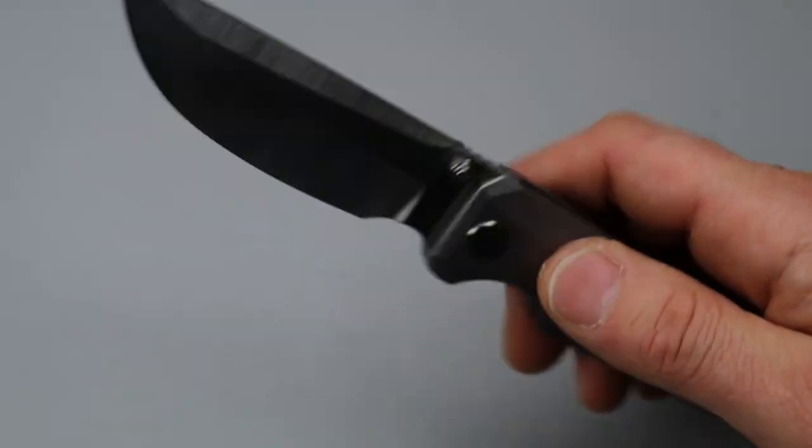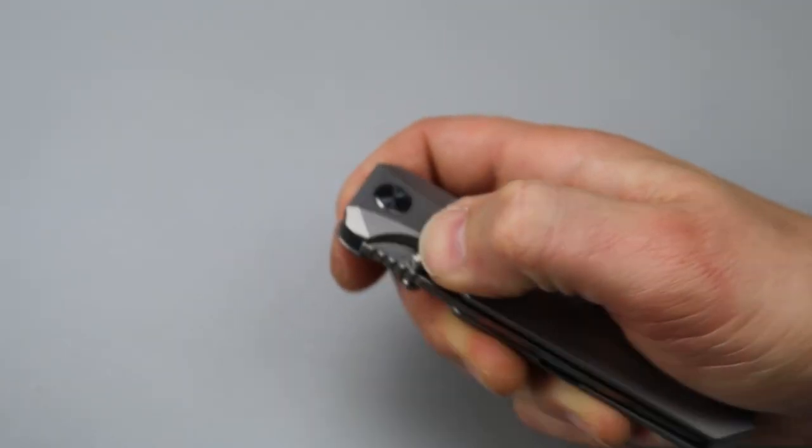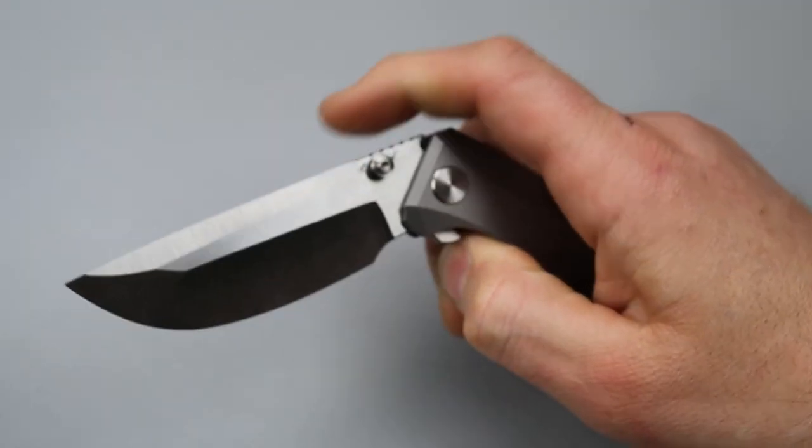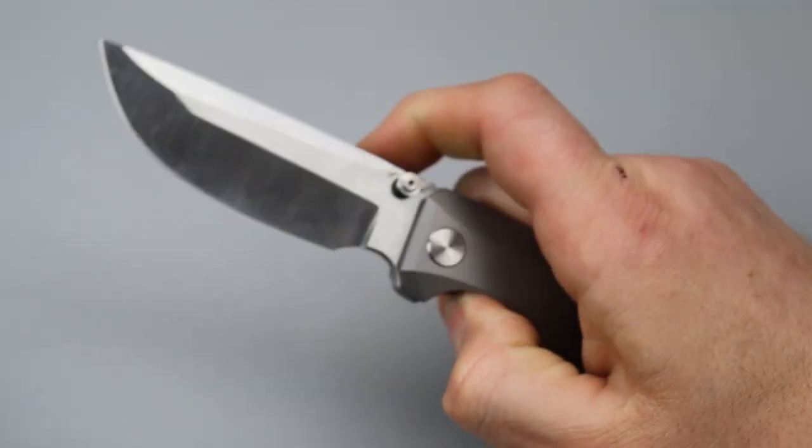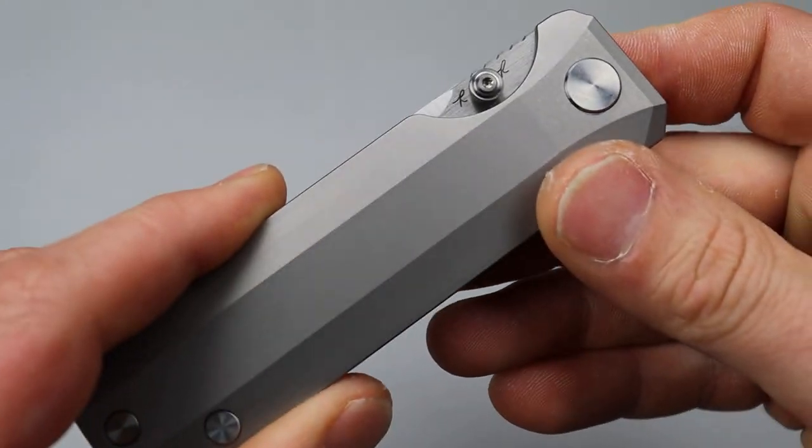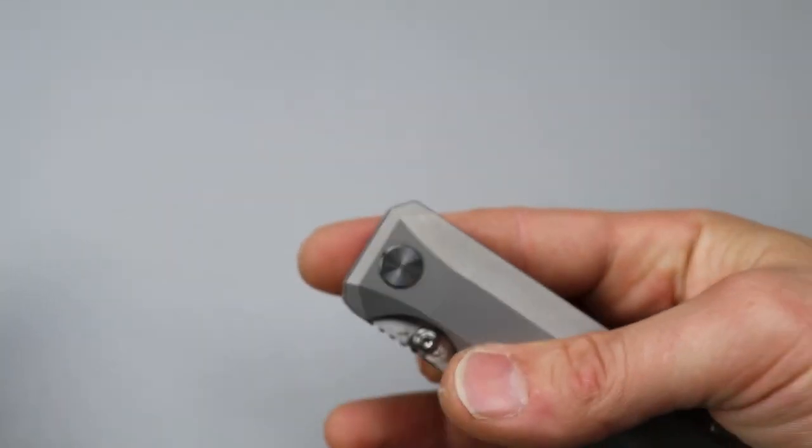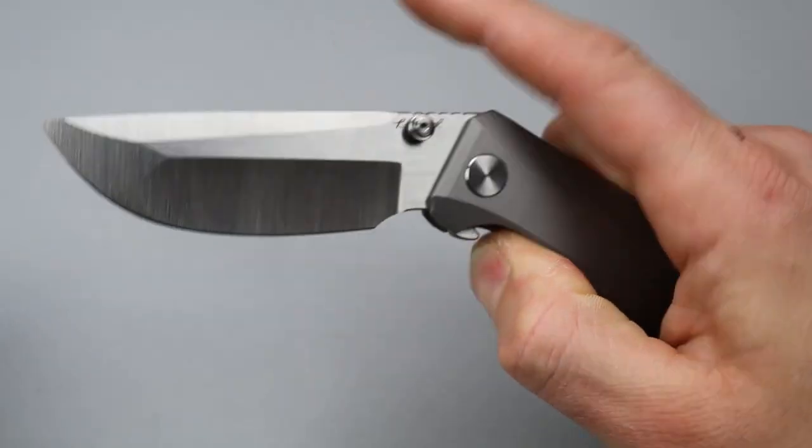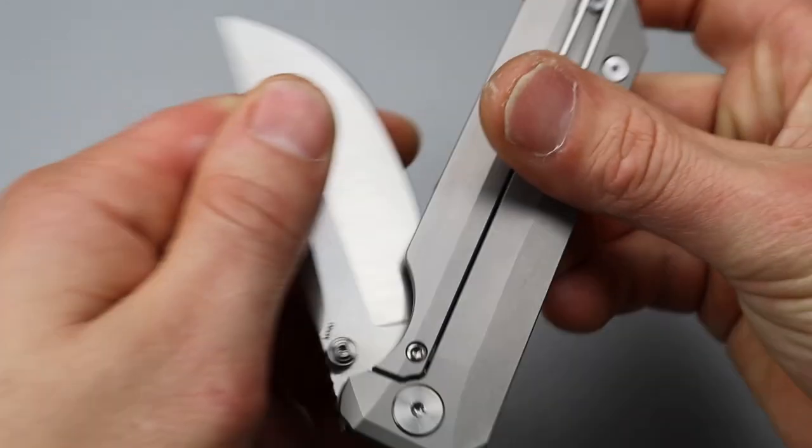Great sound. Let's do the thumb studs again, nice pop. Easy to deploy. The thumb studs are a little tight to the scale. Let's try the reverse flick. Okay, I can do it. It is a little tight to the scale but okay.